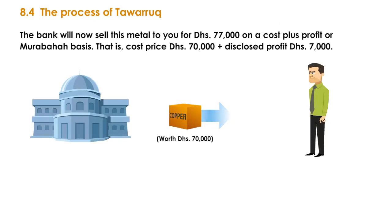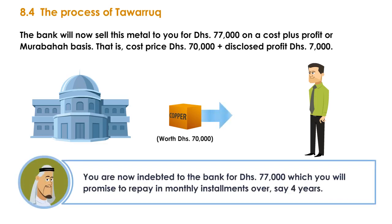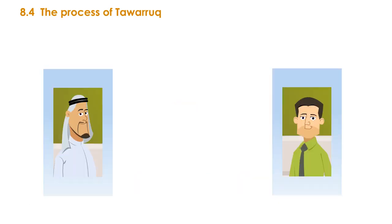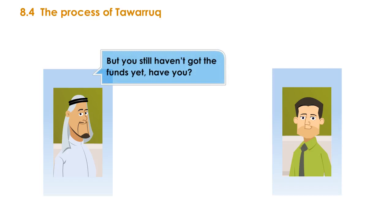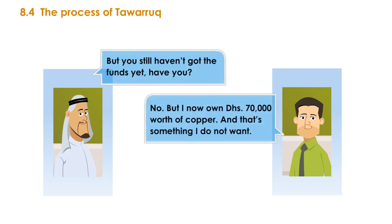The bank will now sell this metal to you for 77,000 dirhams on a cost-plus-profit, or Murabaha, basis. That is, cost price 70,000 dirhams plus disclosed profit of 7,000 dirhams. You are now indebted to the bank for 77,000 dirhams, which you will promise to repay in monthly installments over, say, 4 years. But you still haven't got the funds yet. You now own 70,000 dirhams worth of copper — which is something you do not want.